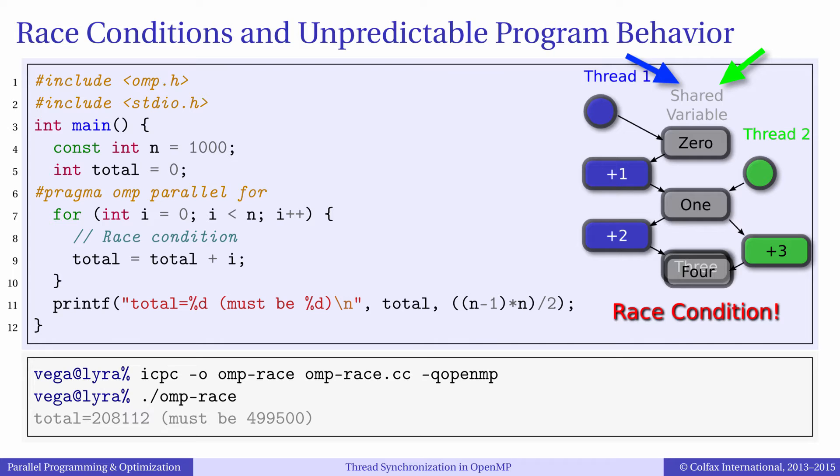What might happen is explained by this diagram. Suppose thread 1 and thread 2 try to increment a shared variable concurrently. Sometimes between the moment that thread 1 reads the variable and writes the incremented result, other threads will not access the shared variable. In this case the result will be correct.